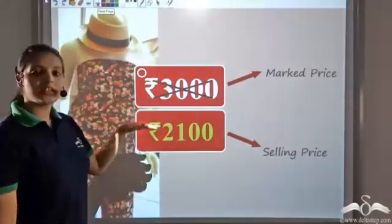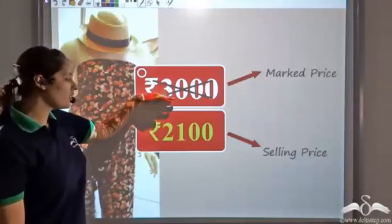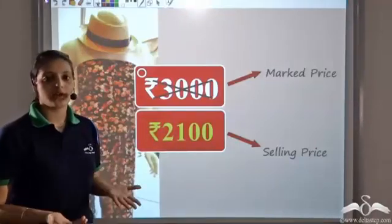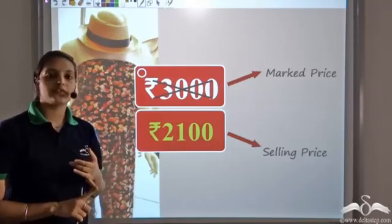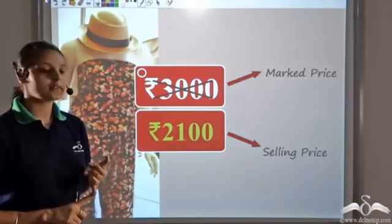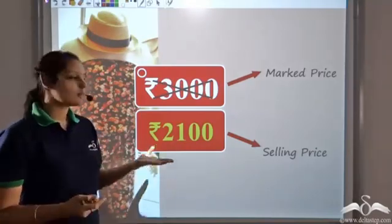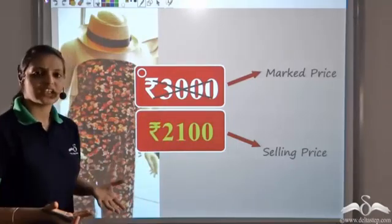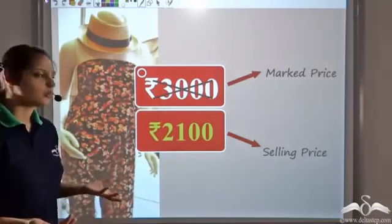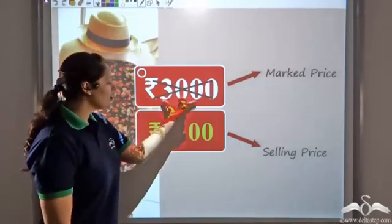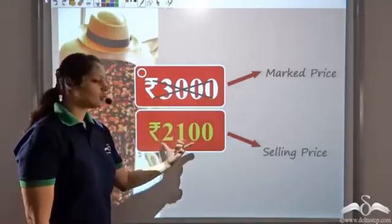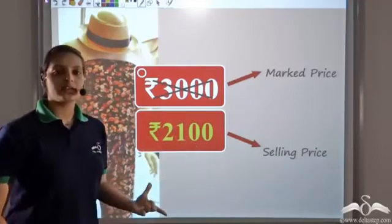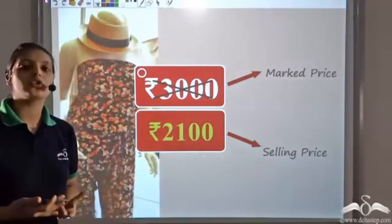This reduction in price from Rs.3000 to Rs.2100 is what we call a discount. All these gift vouchers are nothing but discounts. You might get discounts in other forms too — if you get a free gift, that is also a discount. So the reduction of Rs.900 from Rs.3000 to Rs.2100 is a discount of Rs.900.